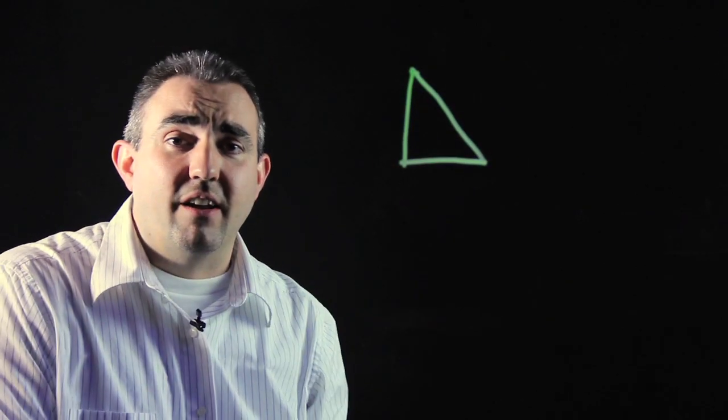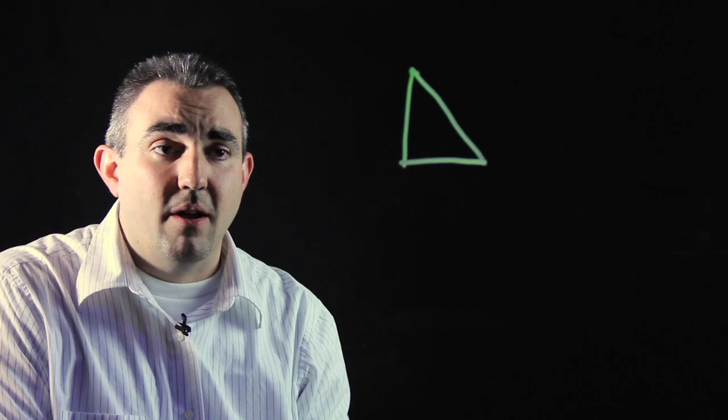A polygon is a shape that has to have at least three sides. The smallest of the polygons is a triangle, a three-sided shape.